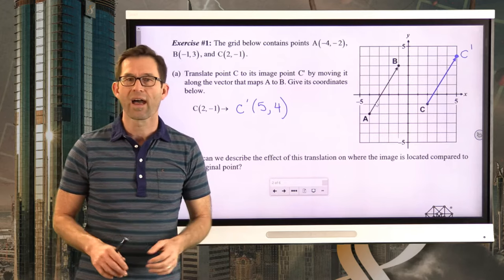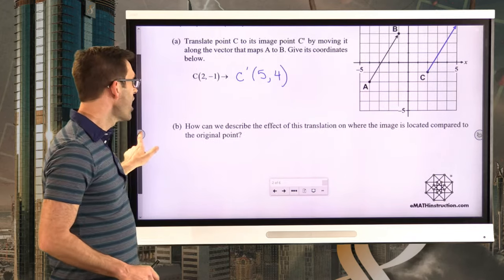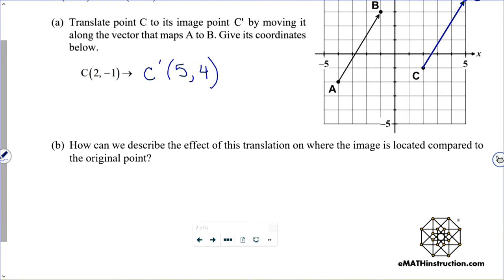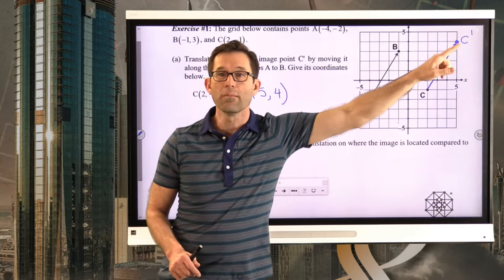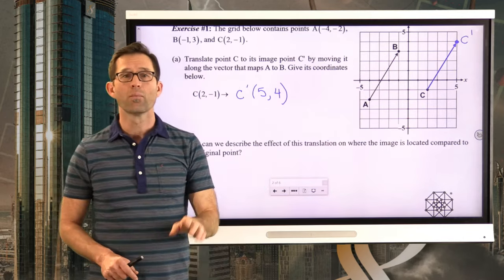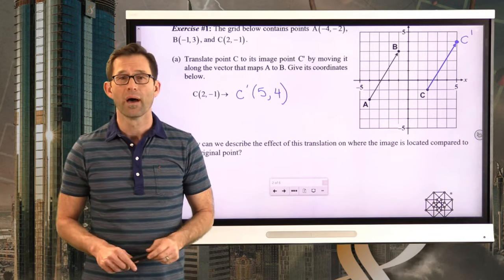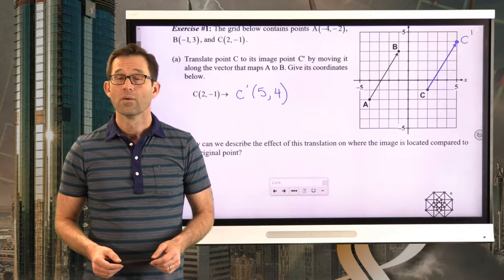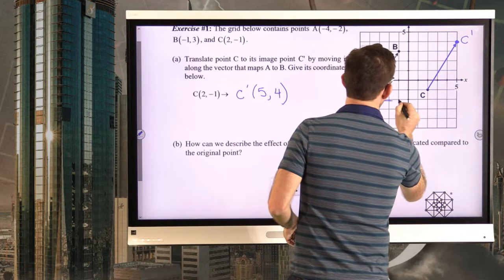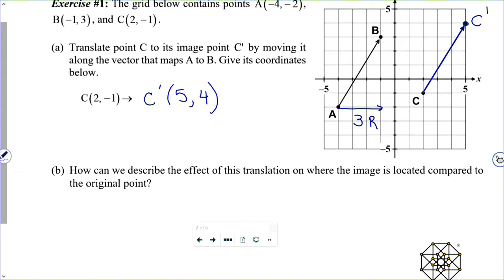Let's get into the brass tacks. Letter B asks: how can we describe the effect of this translation on where the image is located compared to the original point? Whether it's B compared to A, or C prime compared to C — in both cases, we are three units to the right and five units up.